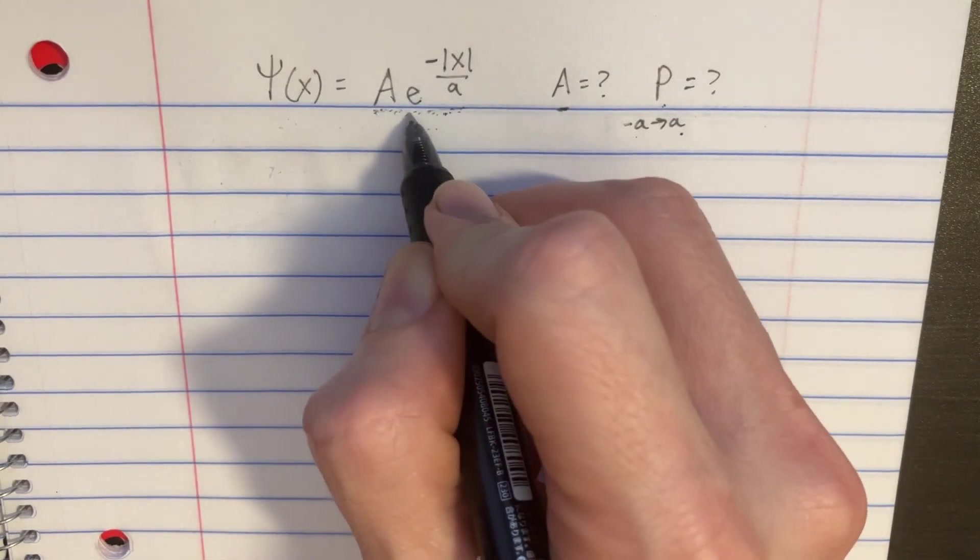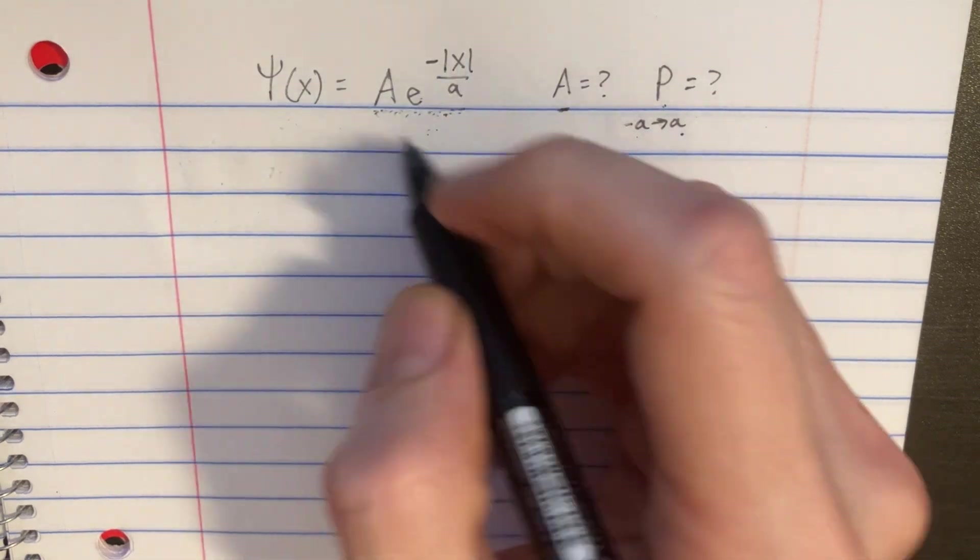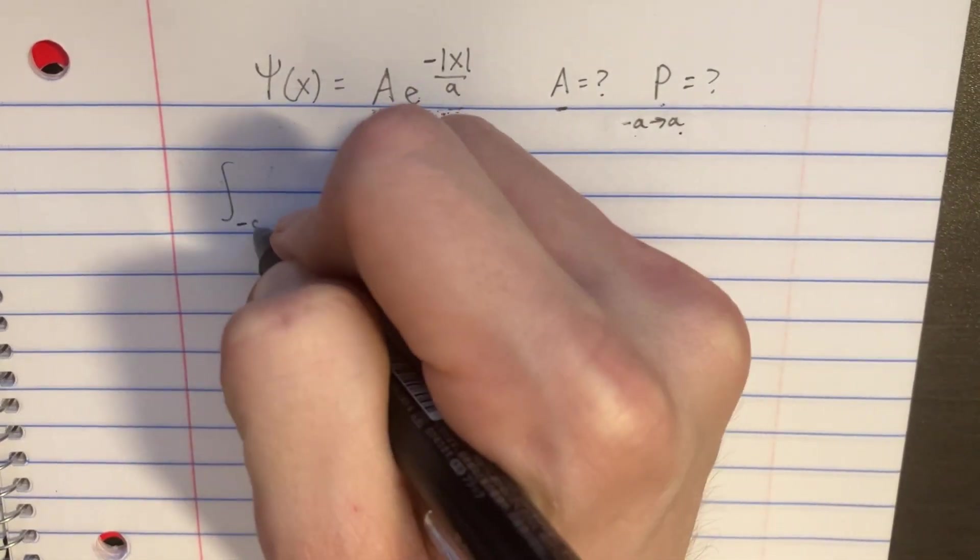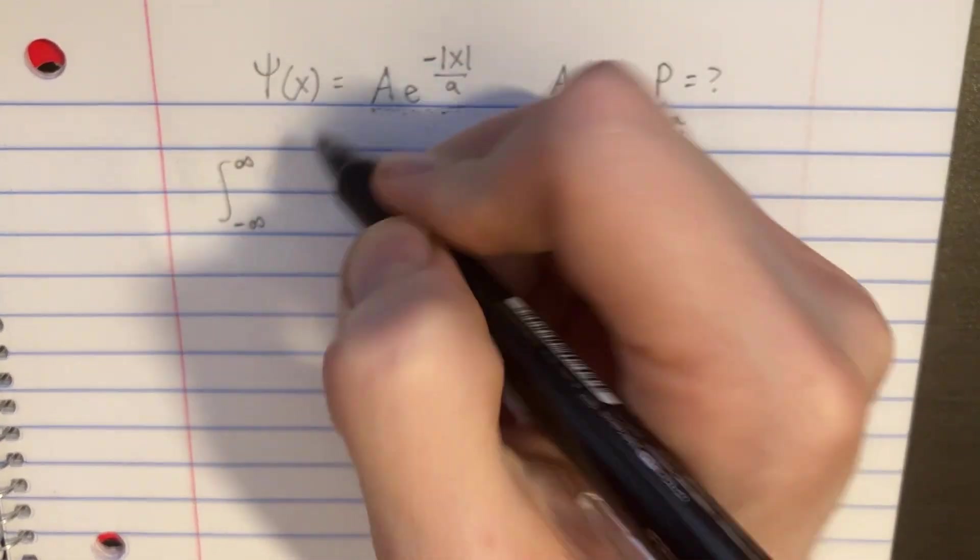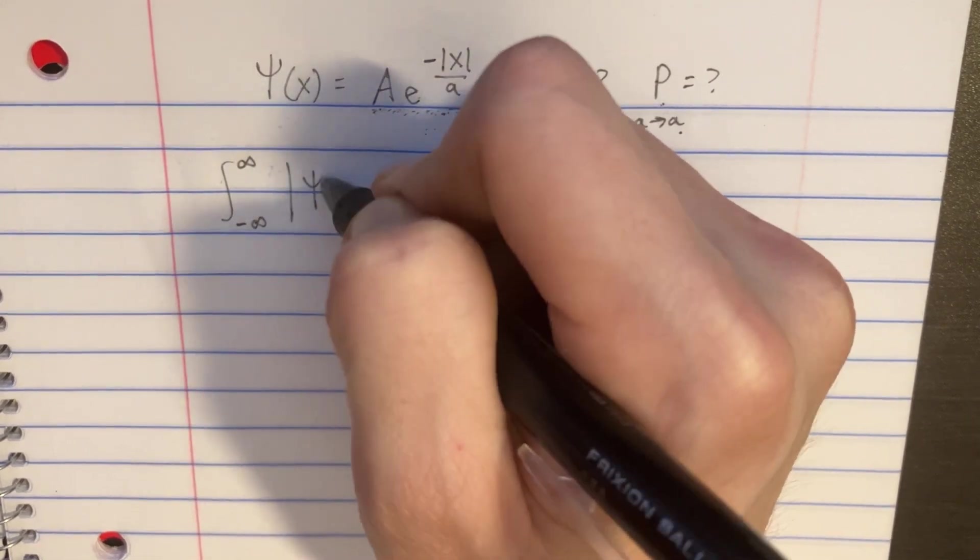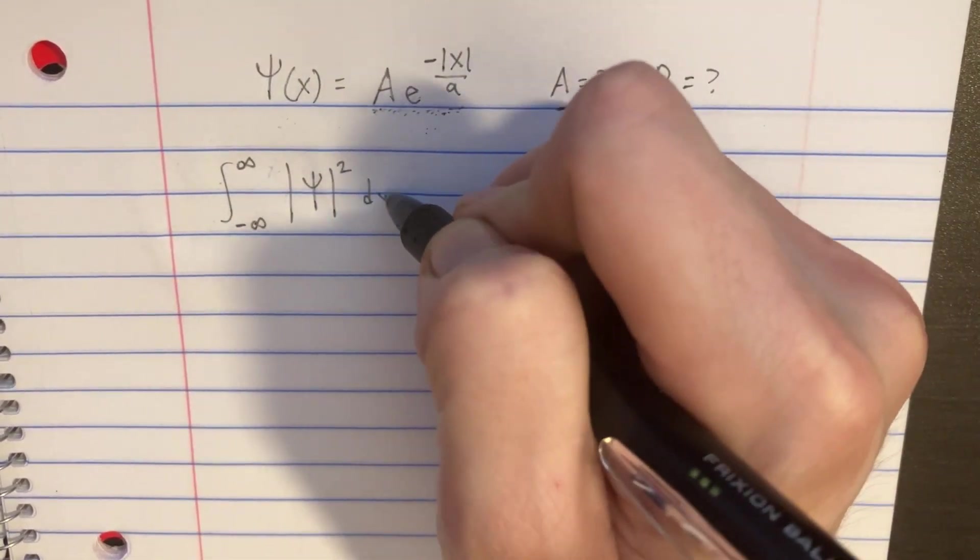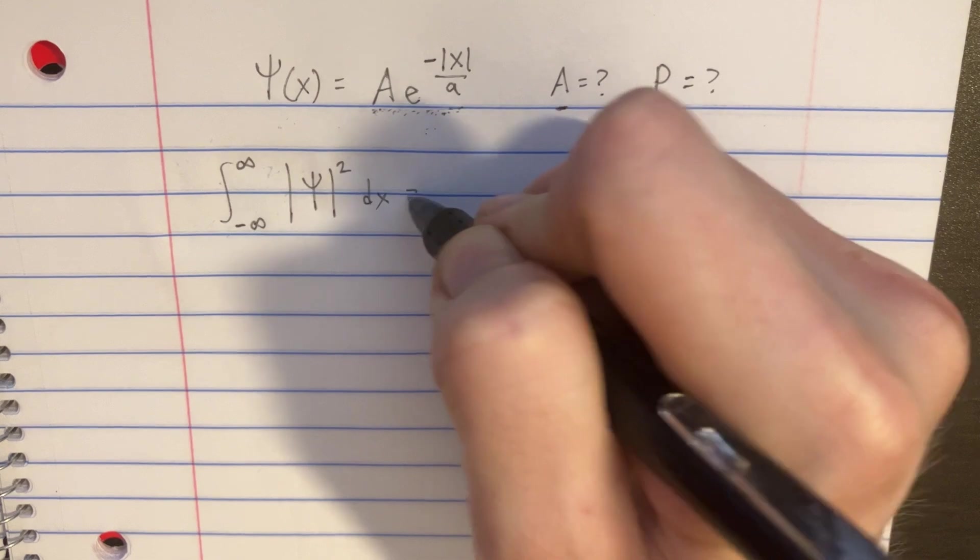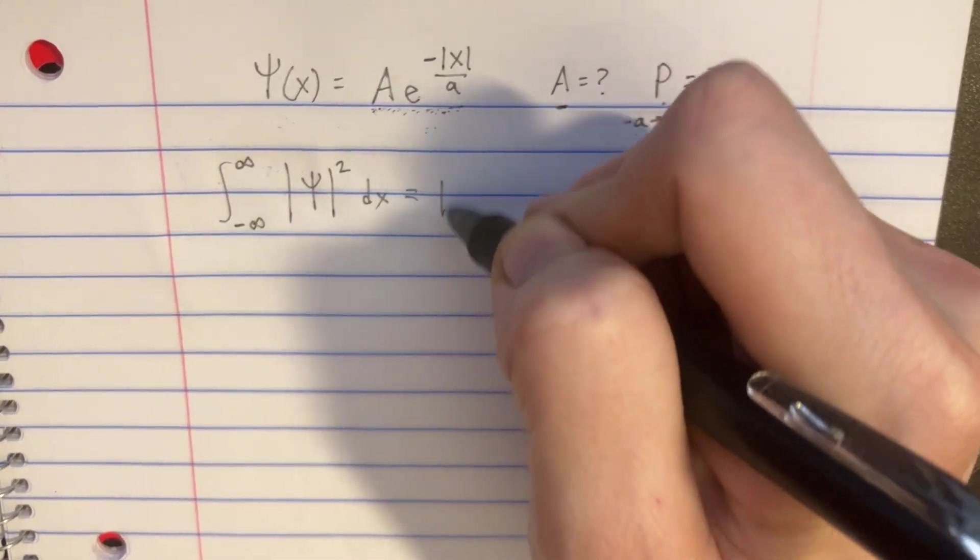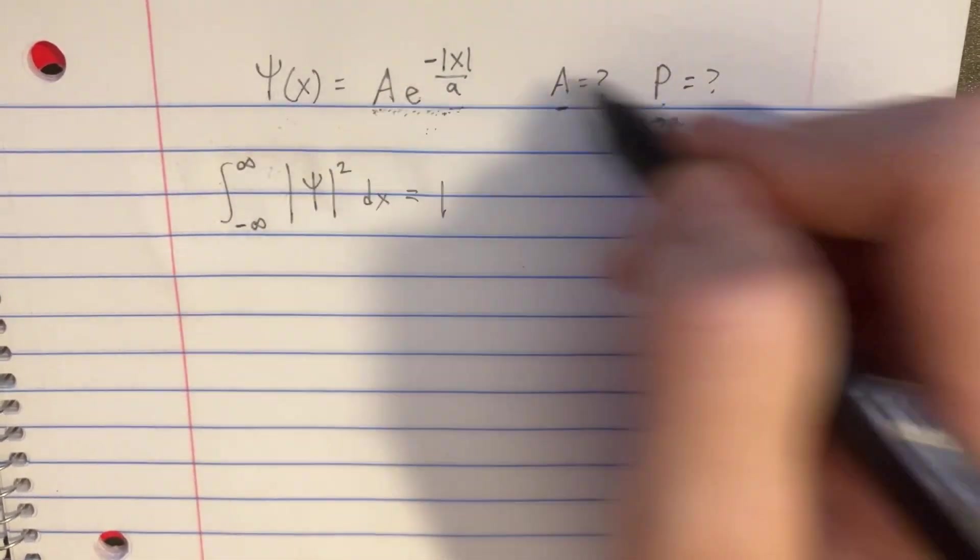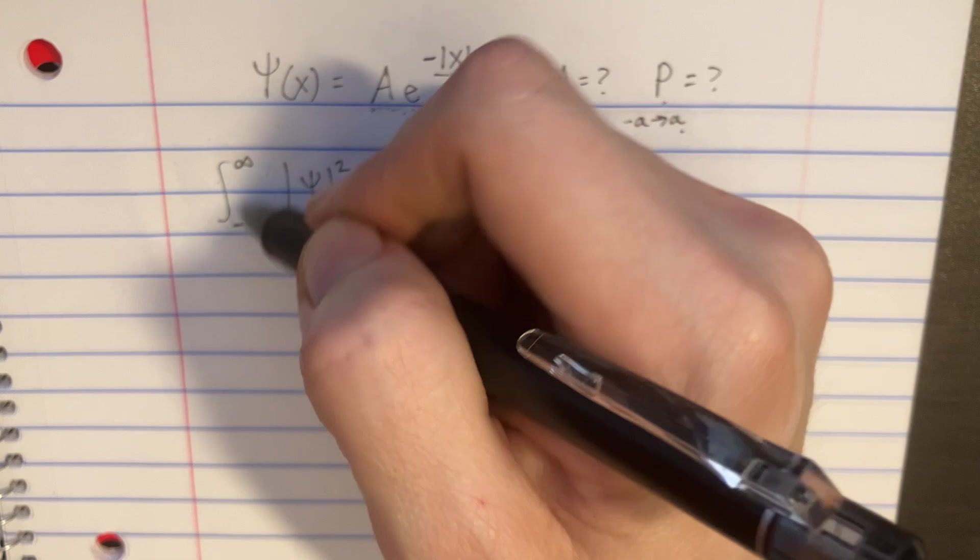Well, in order to find A, we're going to have to normalize the wave function, which involves taking an integral from negative infinity to infinity and then taking the absolute value of the wave function squared, putting that over dx, and then setting that equal to 1, meaning that there's a 100% chance of finding this particle somewhere between negative infinity to infinity.